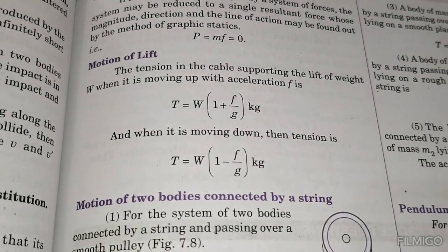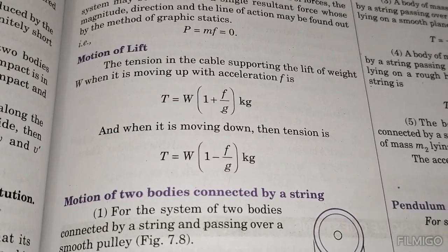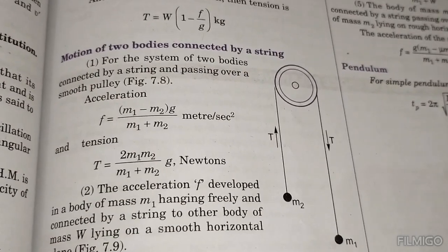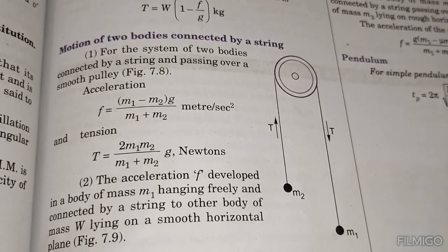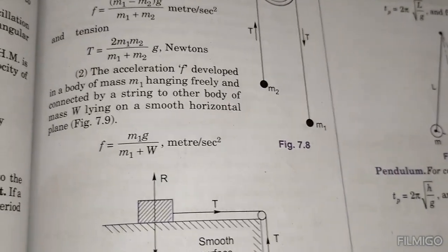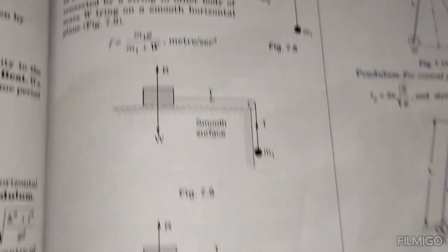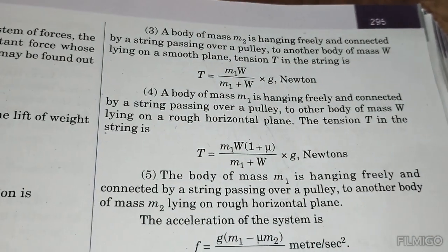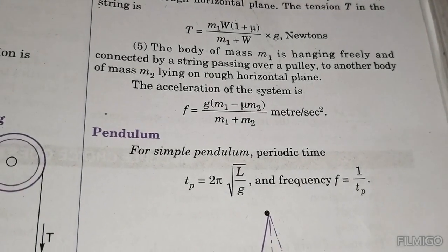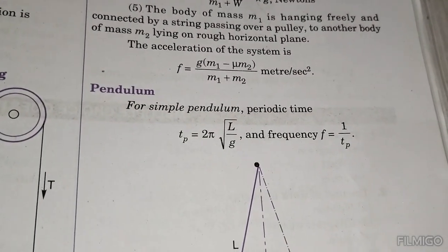For a body in a lift accelerating upward: apparent weight T equals W times (1 plus a divided by g). For a body in a lift decelerating or going down: T equals W times (1 minus a divided by g). For two bodies on an inclined plane connected by a string: F equals m1 minus m2 times g divided by m1 plus m2. Tension T equals m1 m2 g divided by m1 plus m2. With friction: F equals m1 g minus mu m2 divided by m1 plus m2.